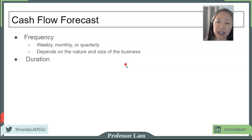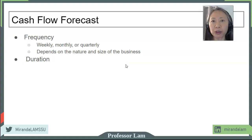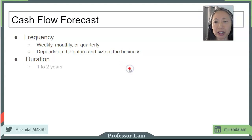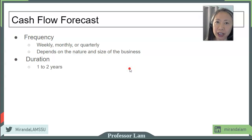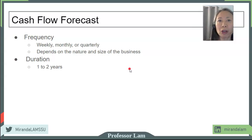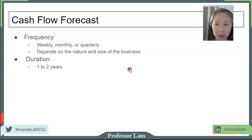Second is duration — for how long will the forecast cover. Typically this may be one or two years. Cash flow forecast is a much more focused analysis. We will talk about longer-term financial planning in the next chapter.